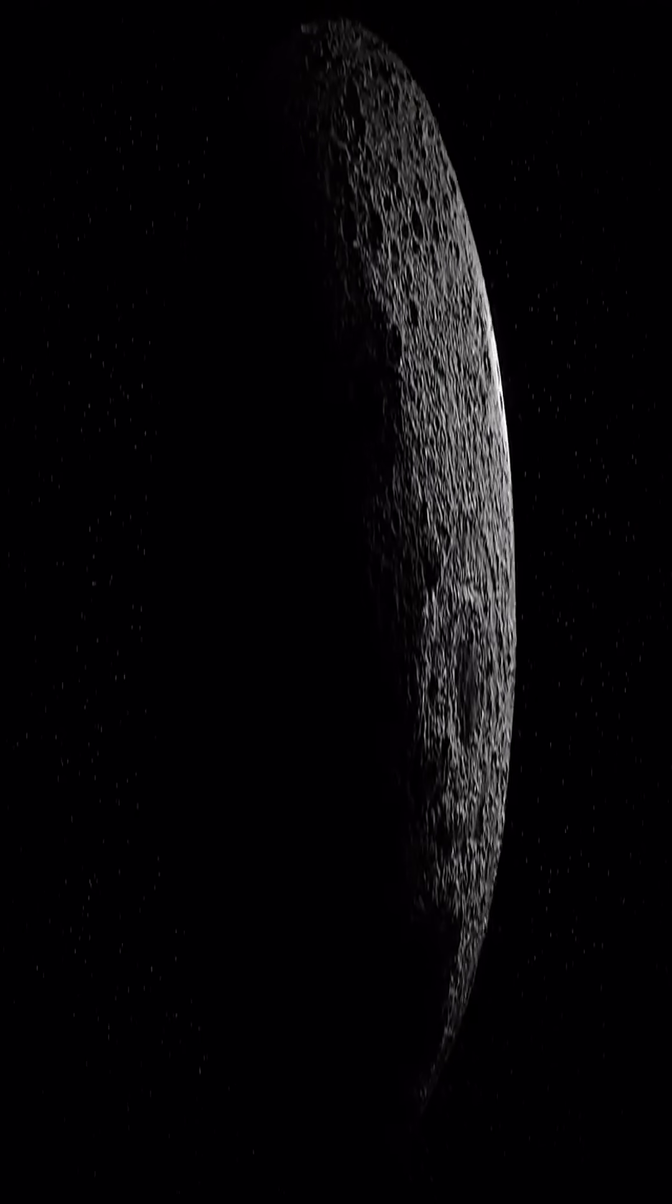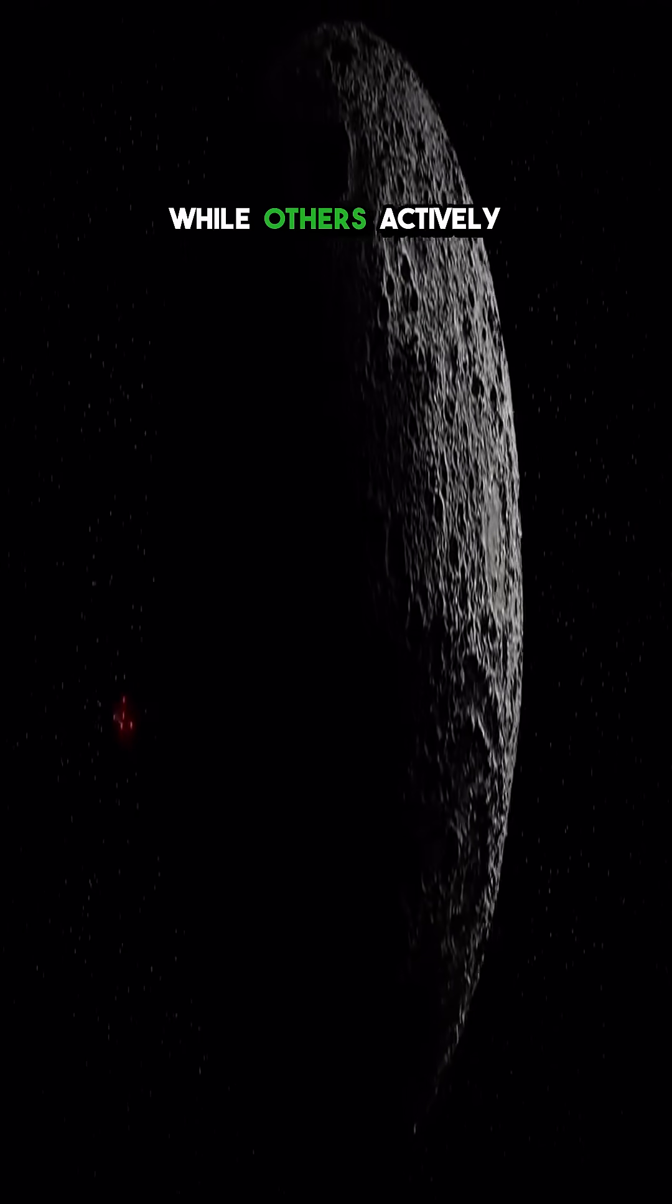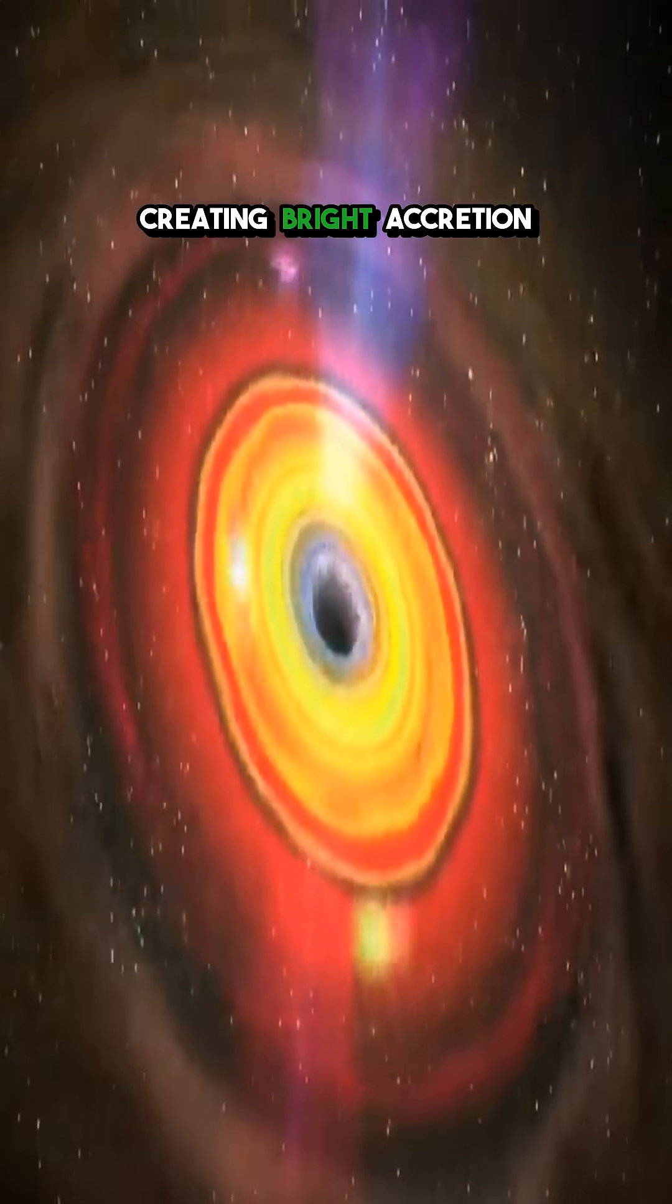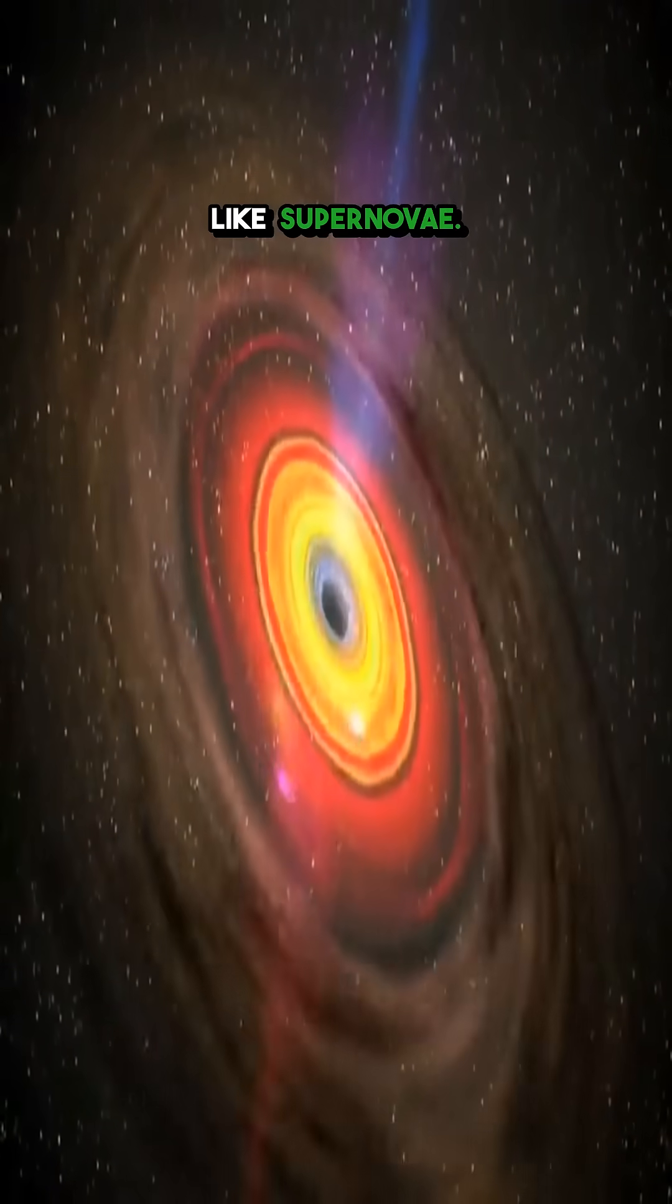Some black holes are quiet, lurking in the shadows, while others actively pull in everything around them, creating bright accretion disks that shine like supernovae.